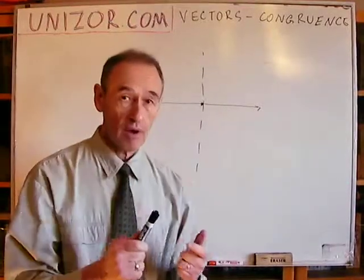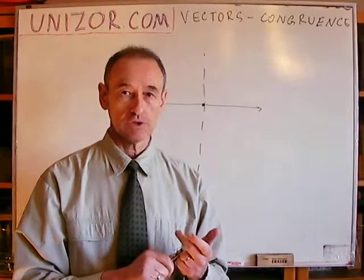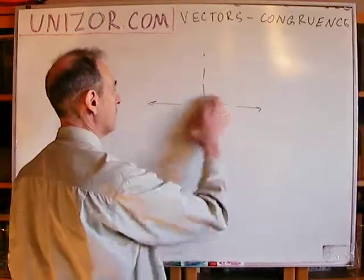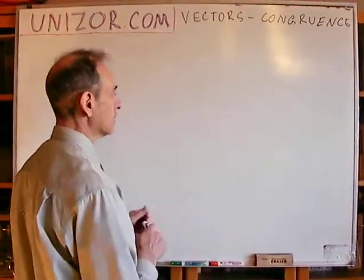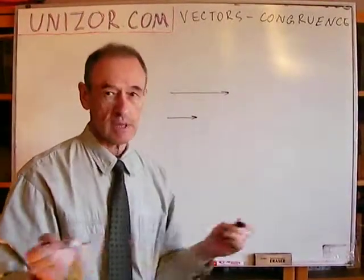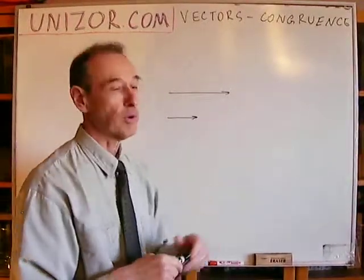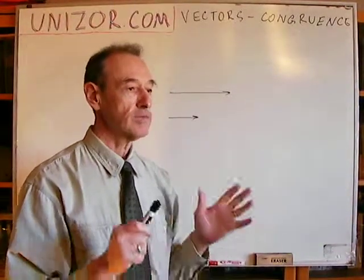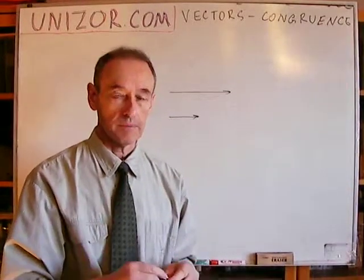I cannot use rotation. I cannot use reflection. I can only use the parallel shift, which preserves both direction and magnitude. Reflection and rotation do not preserve direction. And obviously, if two vectors are parallel to each other but have different lengths, I cannot superimpose one into another either. So only vectors which are parallel to each other and have the same length are congruent.